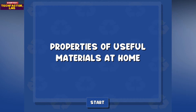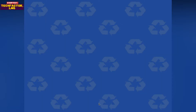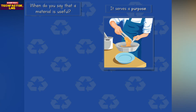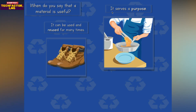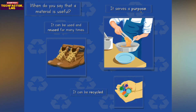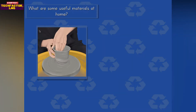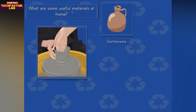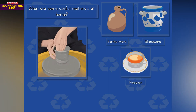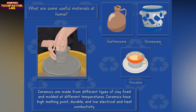Good day class, I'm Teacher F and today we're going to talk about the properties of useful materials at home. When do you say that a material is useful? It serves a purpose, it can be used and reused many times, and it can be recycled. Some useful materials at home include earthenware and stoneware.